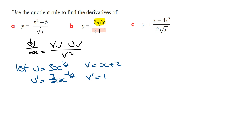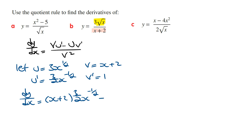Now we just sub these into the formula to work out dy/dx. So dy/dx is going to be v times u dash, which is x plus 2 times 3 on 2 x to the power of minus a half, minus u times v dash, which is minus 3 times x to the power of a half. All over v squared, which is x plus 2 squared.